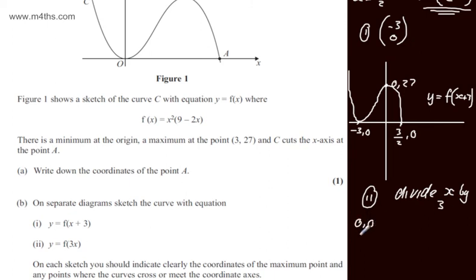So divide x by 3. So if we consider what we've got, we've got the point 0 comma 0, we've got the point 3 comma 27, and we've got the point 9 over 2 comma 0. If we think about this one right here, all we're doing is dividing the x coordinates by 3. So that will be 0, 0.